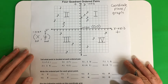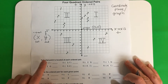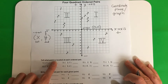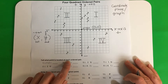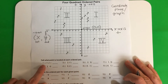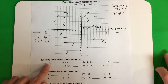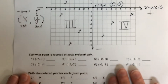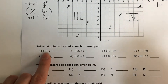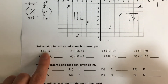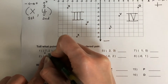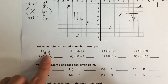Now we're going to go ahead and graph. Tell what point is located at each ordered pair. Let's do number one. Number one says negative seven, negative two. The first number is x and this one is y. Always label them that way.